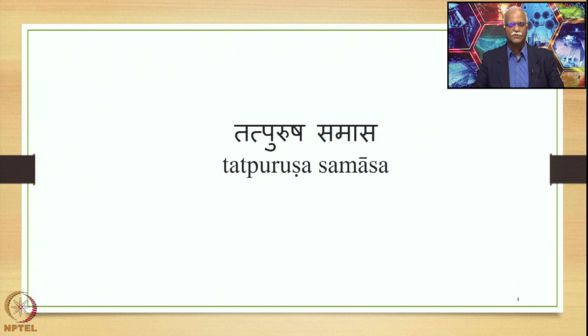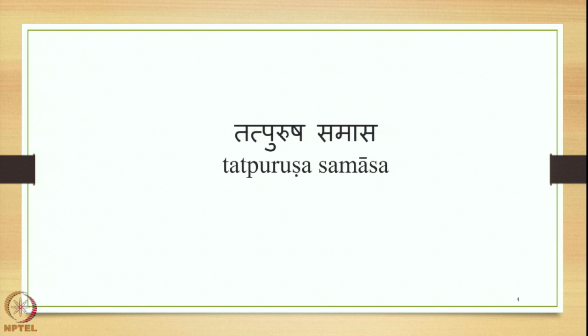In this course, we are concentrated on the Tatpurusha Samasa. We have stated that Tatpurusha Samasa is by far the most productive of the four types of Samasas in Sanskrit. The four types are Avyaibhava, Tatpurusha, Bahurihi and Dvandhuva, stated in that order in Ashtadhyayi, the core text of the Paninian Grammar and Grammatical Tradition. Be it Samasa Vidhayaka Sutras or Samasanta Pratyaya Vidhayaka Sutras or Swaravidhayaka Sutras, the number of Sutras composed by Panini to treat the Tatpurusha Samasa are quite a lot in comparison with those for Avyaibhava, Bahuvrihi and Dvandhuva.